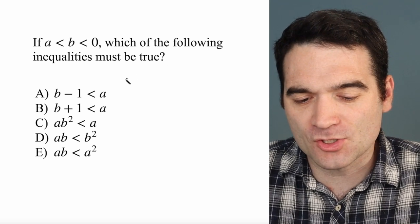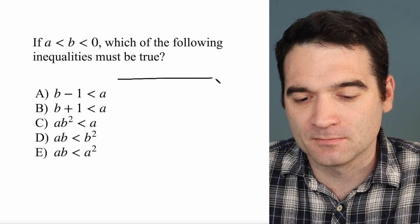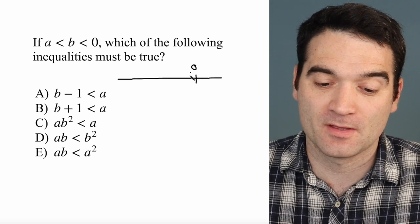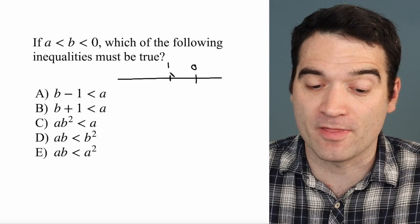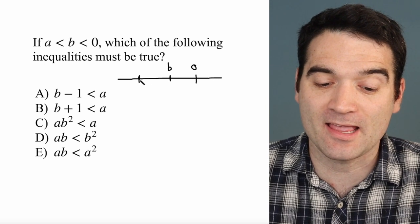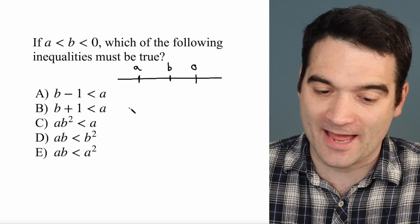Well, let's start by drawing a number line. Number lines are great. They really put things in perspective. So I'll start with 0 on my number line, and I know that B is below that, and A is below that.